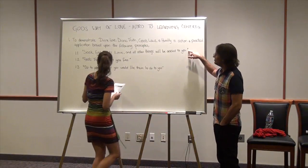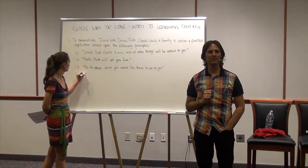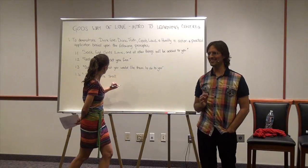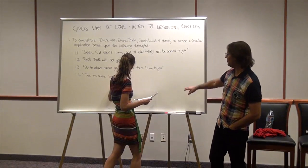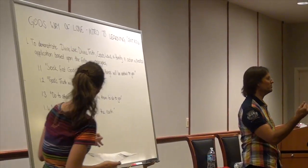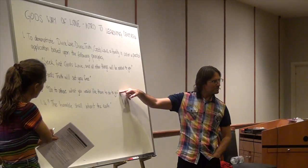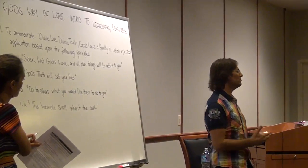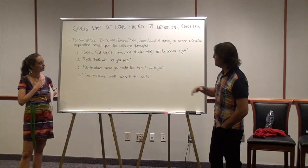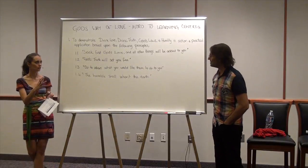The first principle we'd like to illustrate is: if you seek first God's love, all other things will be added to you. The second one is: if you seek God's truth, it will set you free. The third one is: do unto others what you would like them to do to you — what some would call the golden rule, which I actually call ethics. And the fourth one is: the humble or the meek will inherit the earth, which is to do with the attitude we have inside us.